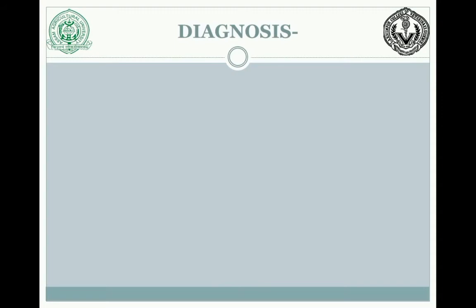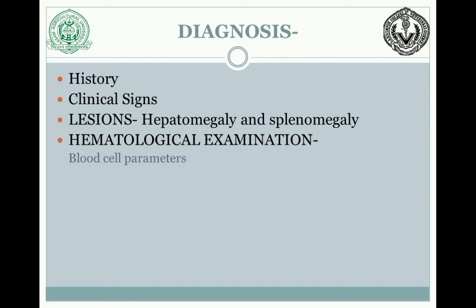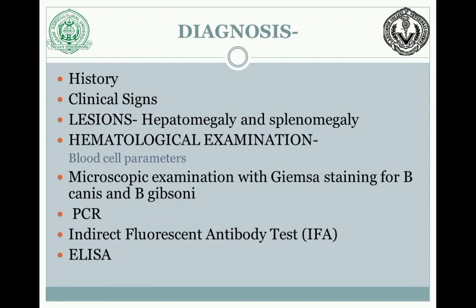For diagnosis, we first take a proper history of the animal, then evaluate clinical signs including anemia, hemoglobinuria, anorexia, etc. In a dead animal, lesions such as hepatomegaly and splenomegaly are noted. Hematological examination checks blood parameters — hemoglobin levels will be much lower and there will be thrombocytopenia as well. We then go for microscopic examination with Giemsa staining of blood smears, and also ELISA.